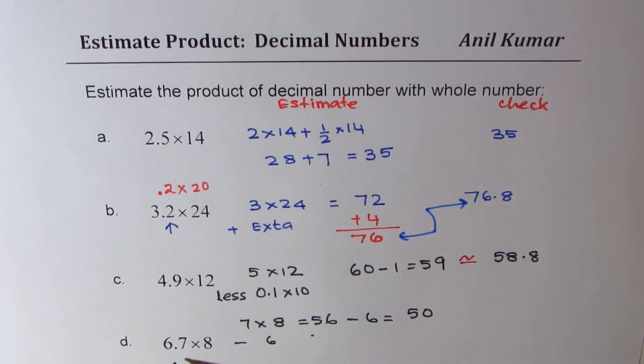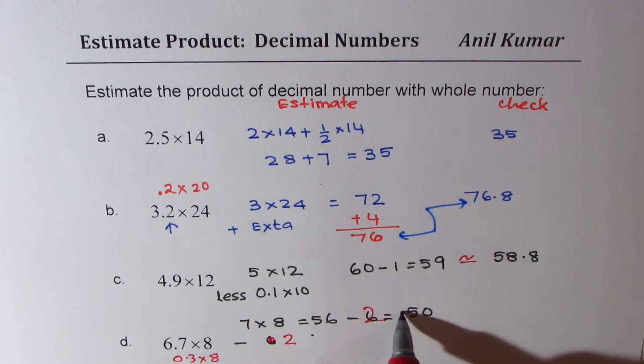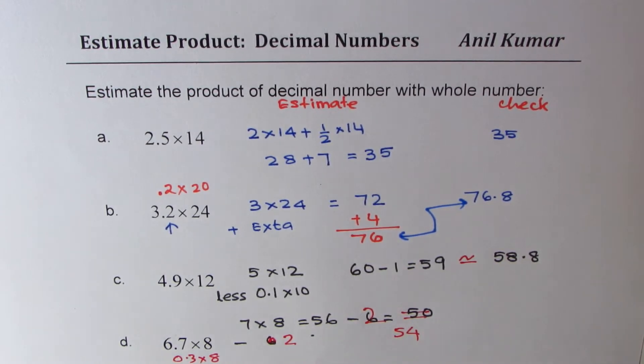It should be less 0.3 times 8. So we'll do minus 2, not 6. So if I do minus 2, we estimate 54. We just added 0.3, so we have to take away 0.3 times 8, which is 2.4. That means 2. So 54 is our estimate.